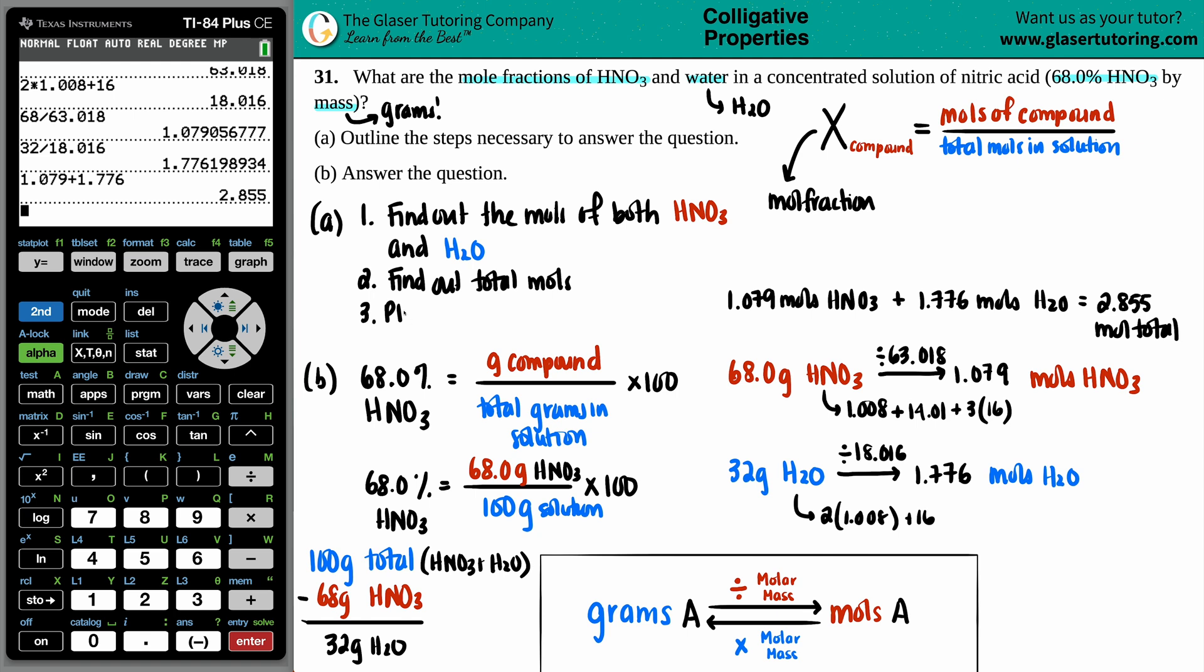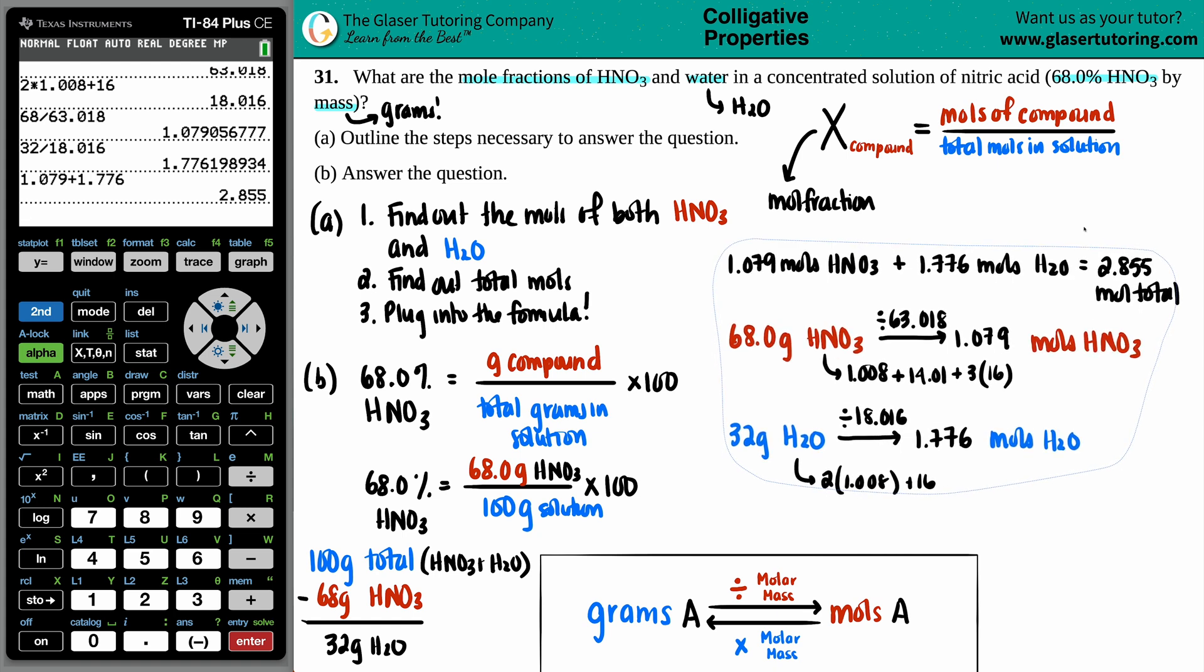And now, the last thing is to just plug into the formula. So, let's see, maybe I can scooch this up a little bit, and I'll put X equals, we got two of them, so X equals, and then X equals. This one will be for the HNO3, and then the other one will be for the water. For the HNO3, the moles of that compound we said was 1.079, divided by the total moles, which is 2.855, and then for the water, I have 1.776, divided by the total amount, 2.855.